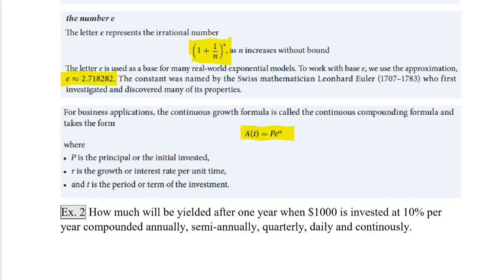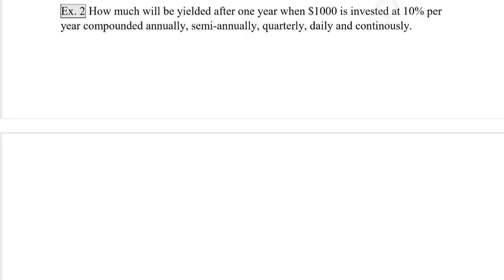This is when we are compounding continuously, and P is the principal, r is the interest rate, and t is the number of years of the investment. Example 2: How much will be yielded after one year when $1,000 is invested at 10% per year, compounded annually, semi-annually, quarterly, daily, and continuously? So we are going to be using A equals P times (1 plus r over n) to the nt, except for when we're doing continuously, which is A equals Pe to the rt.